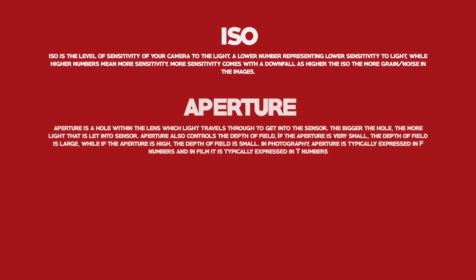Aperture is a hole within the lens which light travels through to get into the sensor. The bigger the hole, the more light it lets into the sensor. Aperture also controls the depth of field — if the aperture is very small, the depth of field is large, while if the aperture is high, the depth of field is small. In photography, aperture is typically expressed in F numbers, and in film it is typically expressed in T numbers.